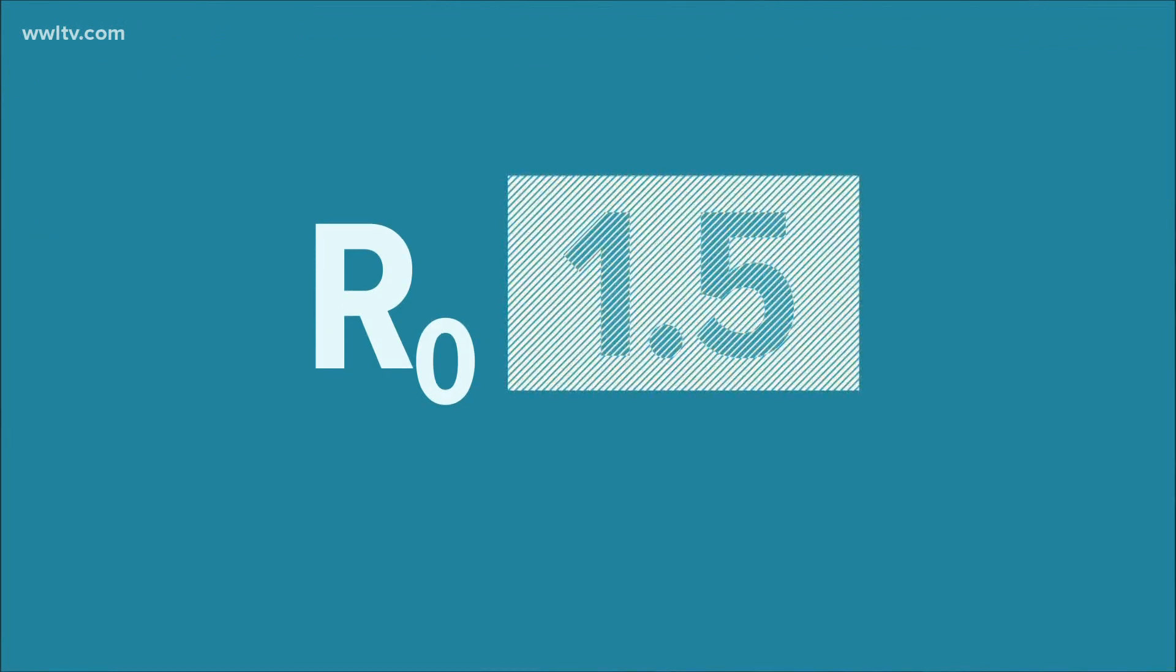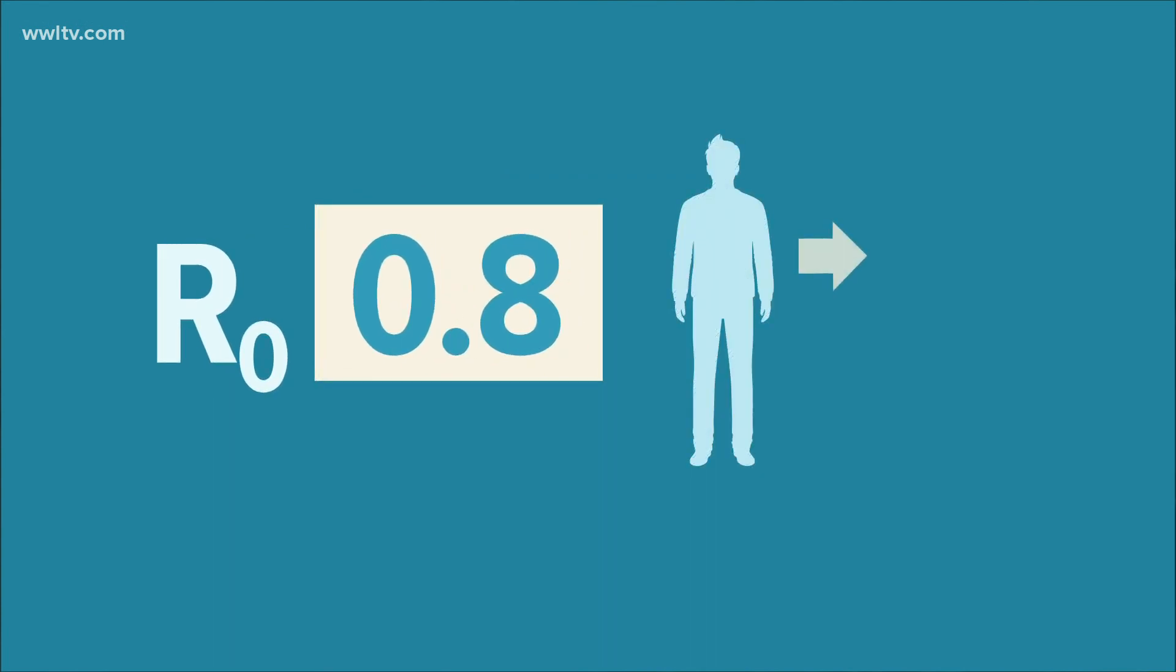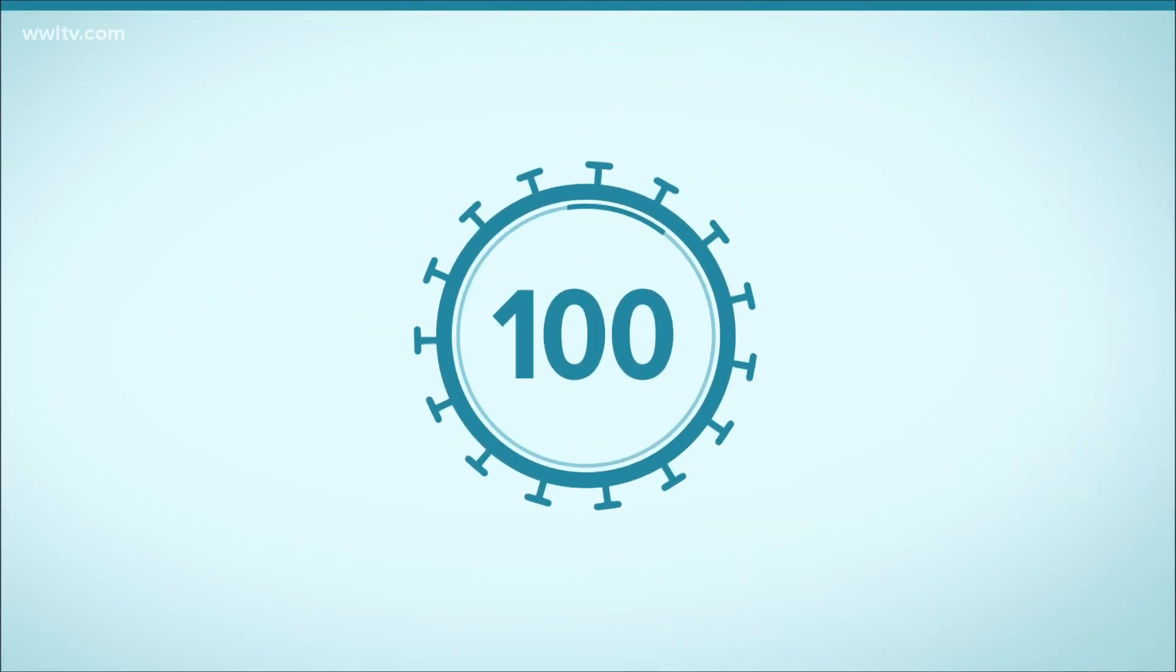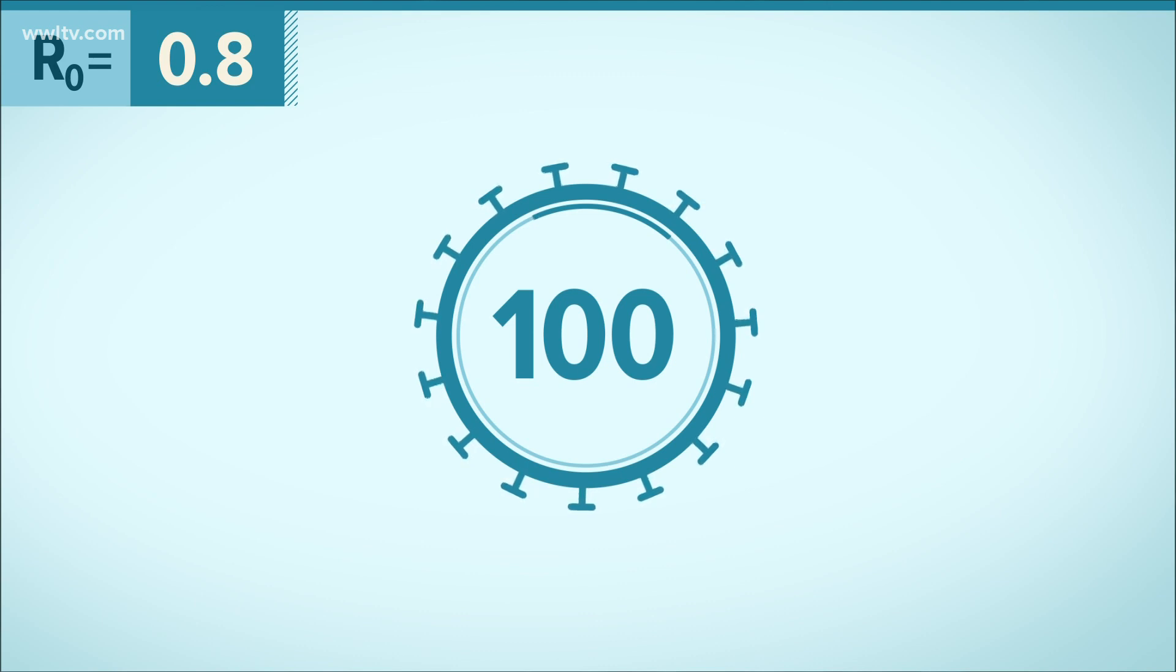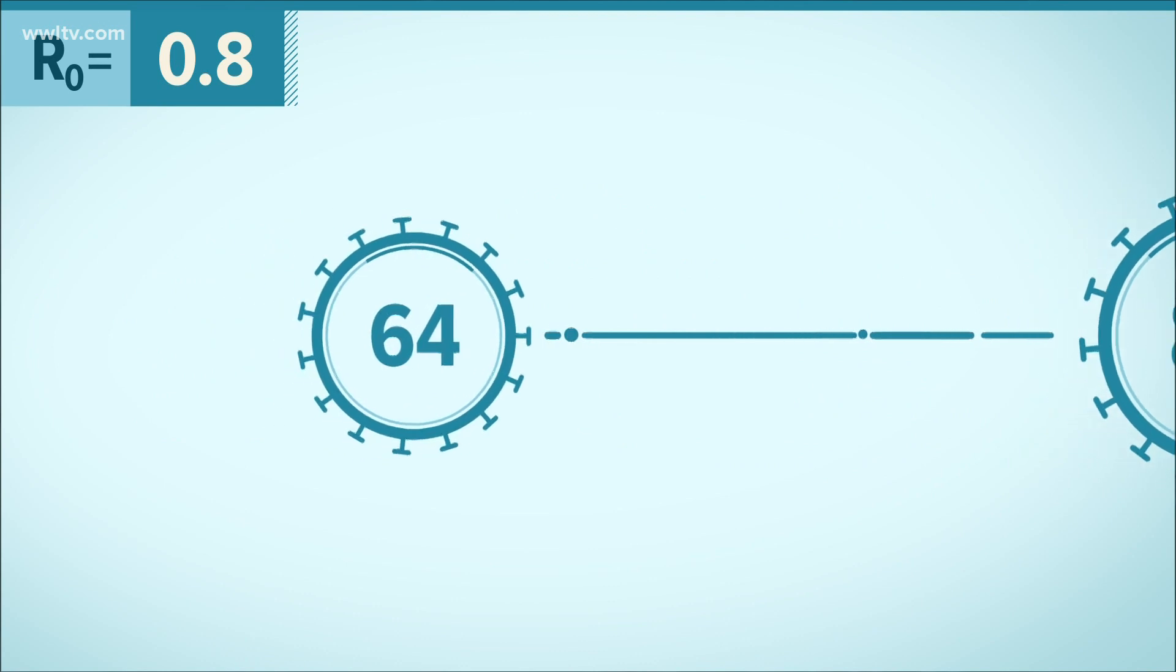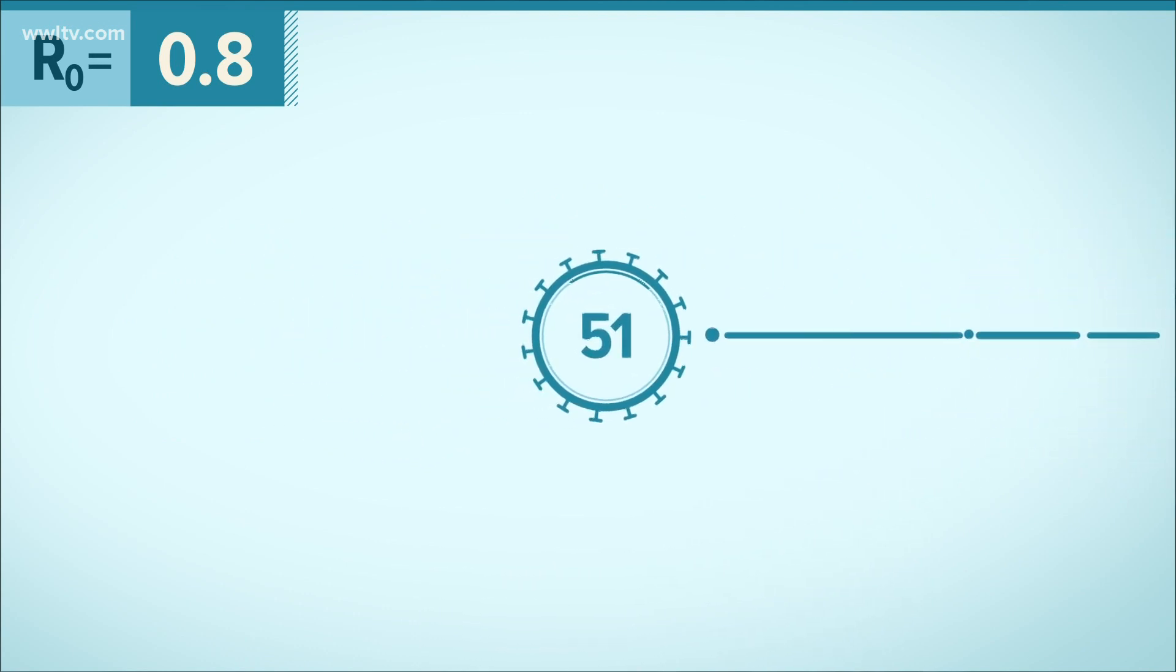But now let's see what would happen if that number is less than 1, say, 0.8. Now each sick person would pass the disease along to fewer than one person. So let's go back to that same group of 100. With the R-naught number being 0.8, that group of 100 would only infect 80 people. Those 80 would infect only 64 people. They would only infect 51 people.